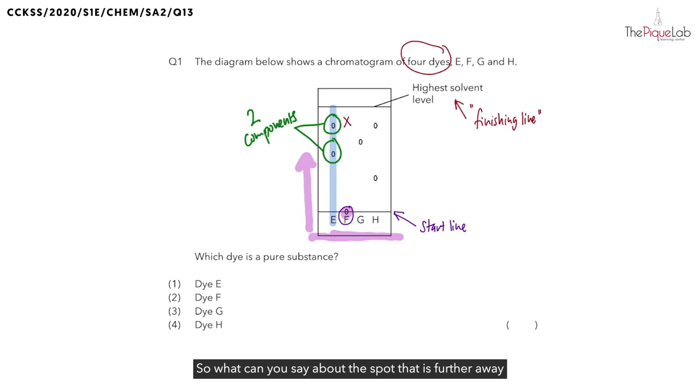So what can you say about the spot that is further away from the finishing line, spot Y. Is it more soluble or less soluble? Since it is further away from the finishing line, it has moved slower in the solvent and is less soluble in the solvent.